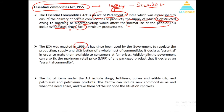Since then, the government can use this law to ensure that essential commodities are available in the market at fair prices — regulation, control, and price control can all be applied. The government can also fix the Maximum Retail Price of any product if it declares it an essential commodity. The list of items includes drugs, fertilizers, pulses, edible oils, petroleum and petroleum products. The center can include new commodities as the need arises.